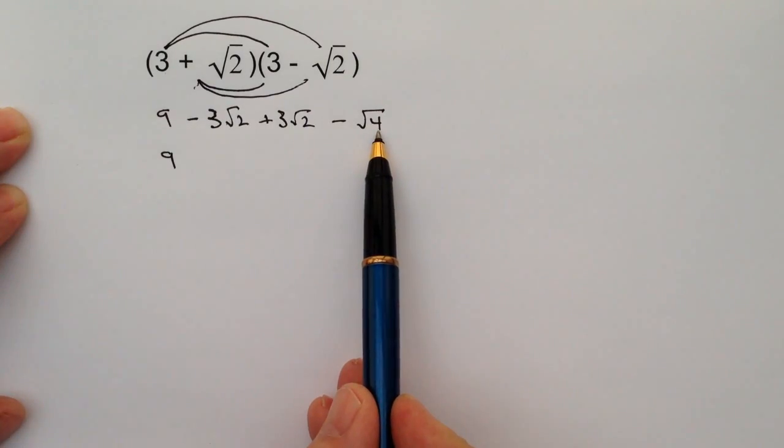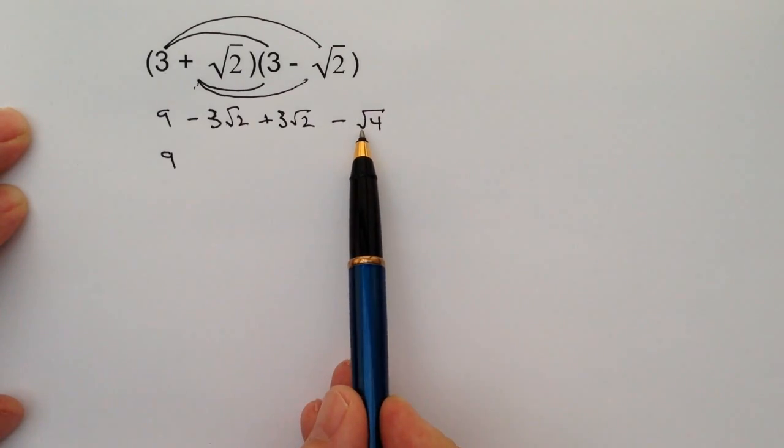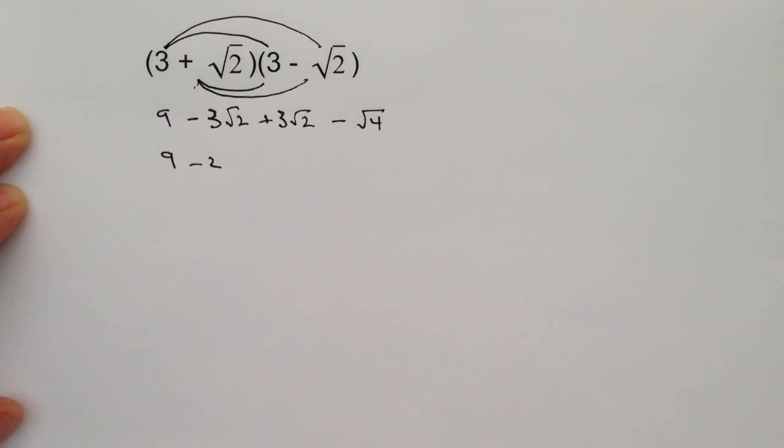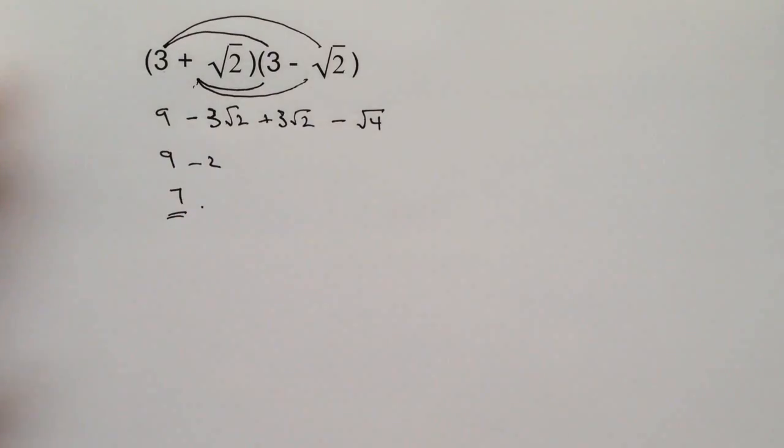Now we've got minus root four. The square root of four is actually two, so this simplifies to minus two. The question then becomes nine minus two, and nine minus two equals seven, which is the answer to this question.